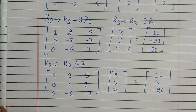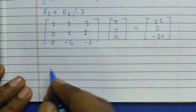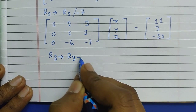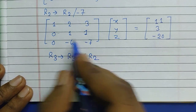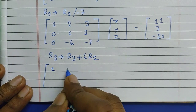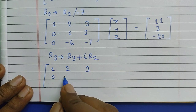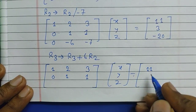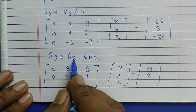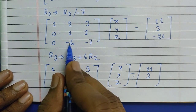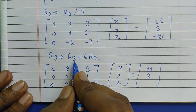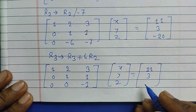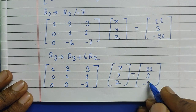Now we work on the third row to eliminate the minus 6 in the second column. We apply R3 implies R3 plus 6R2, multiplying R2 by 6 and adding to R3. The first entry: 0 plus 6×0 gives 0. The second entry: minus 6 plus 6×1 gives 0. The third entry: minus 7 plus 6×1 gives minus 1. Right-hand side: minus 20 plus 6×3 gives minus 2.